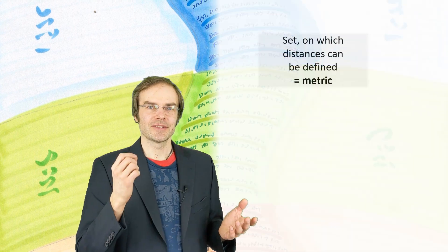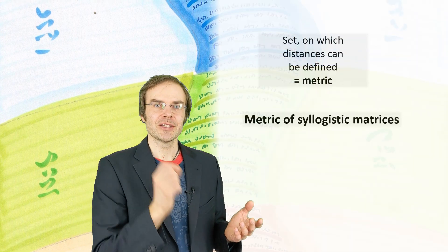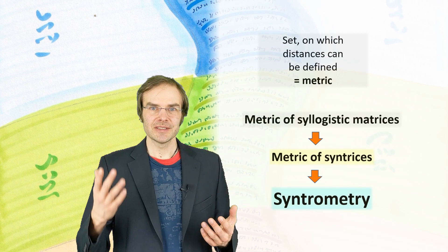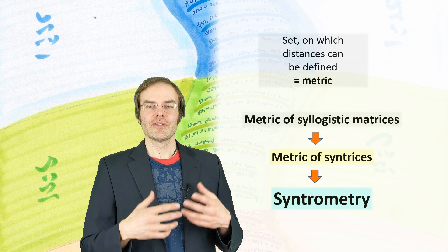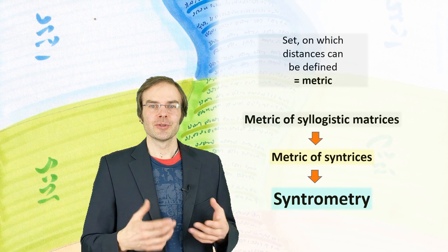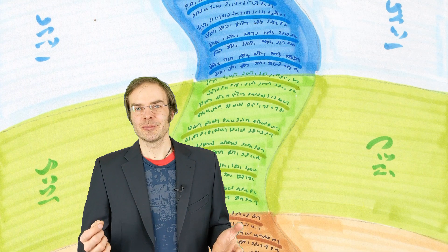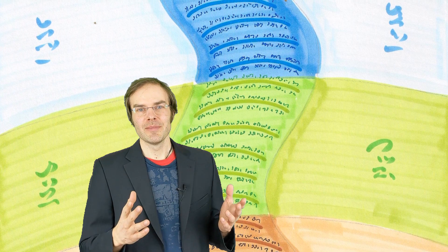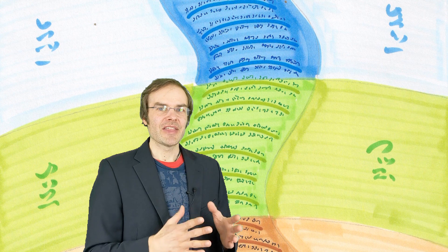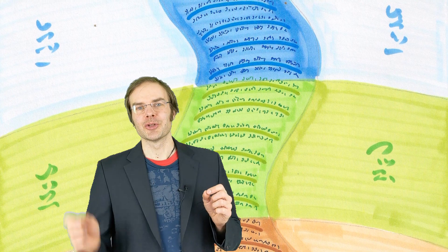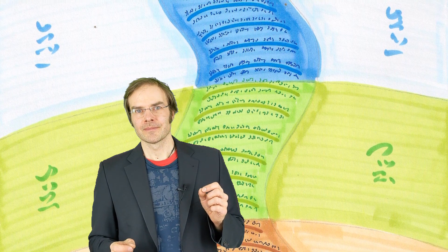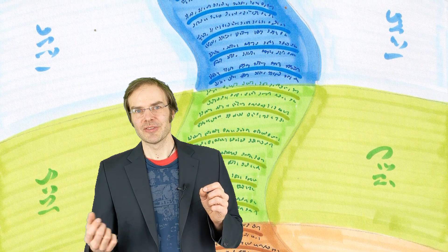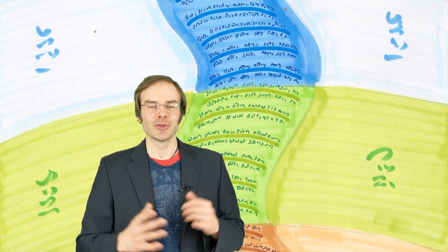And now you can understand what syntrometry means. It is the matrix of syllogistic matrixes. So syntrometry is a system in which the concept of distance is extended to non-countable statements. As I said before, mathematics is one special case of it. And Burkhard Heim called mathematics the two-value anthropomorphic logic. But syntrometry allows statements about statements of statements of systems and put them into an order.